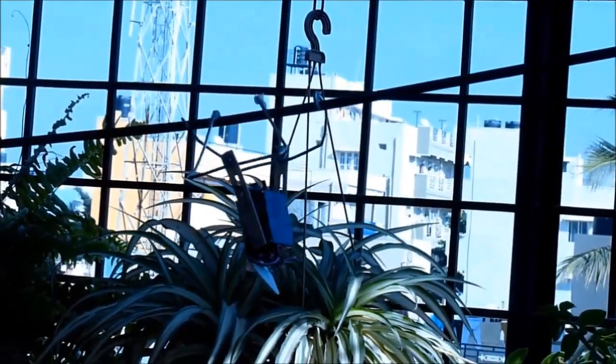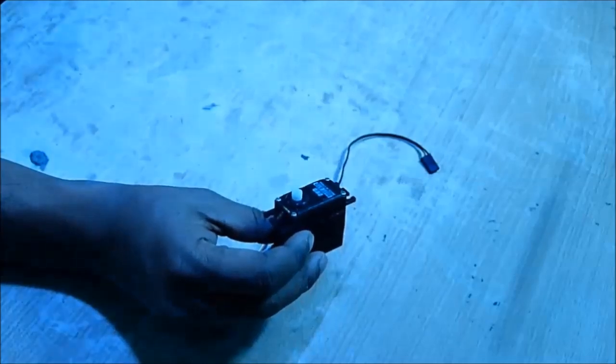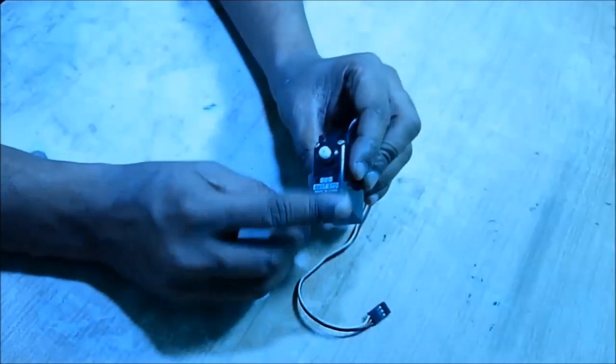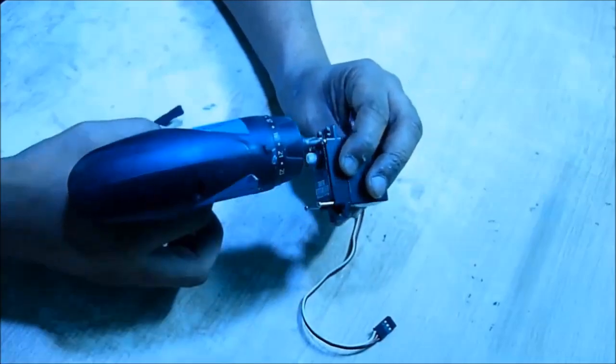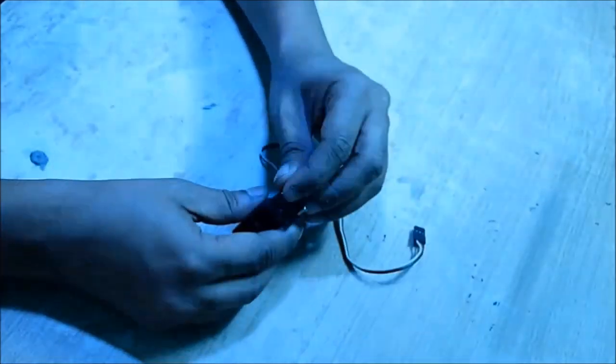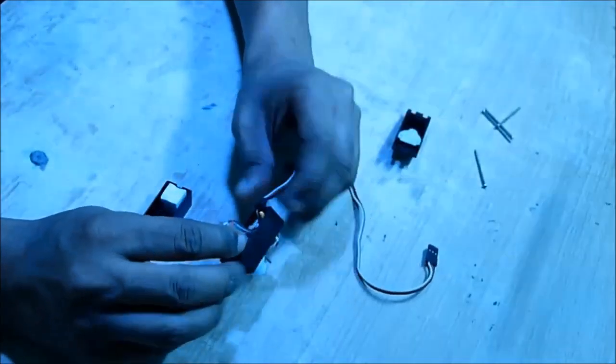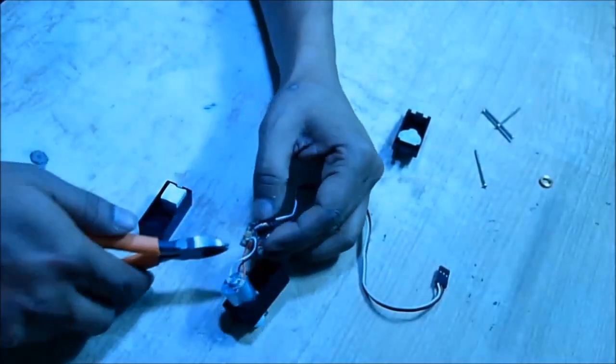Now let's make it. To make it you need a gear motor or a servo motor. You need to modify it, open it, and take the circuit out. Cut the three wires from the circuit.